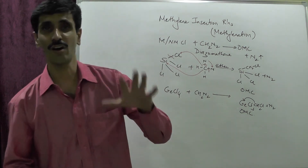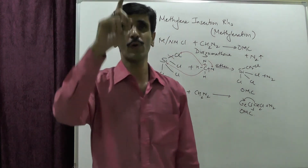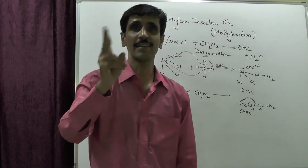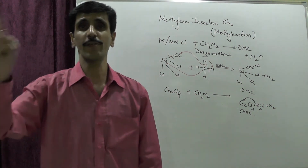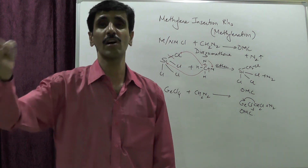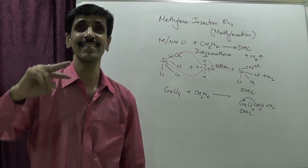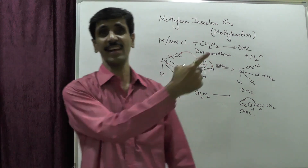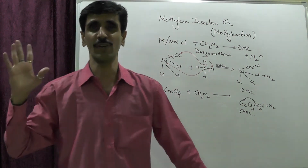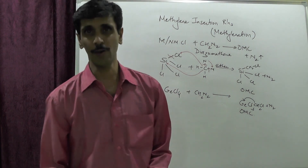With this, we finish all five methods of preparation of organometallic compounds. The first was oxidative addition, also called direct reaction of metals. The second was metal-metal exchange reaction, also called transmethylation. The third was carbonion-halide exchange reaction, also called metathesis. The fourth was metal-hydrogen exchange reaction, also called transmetallation. The fifth and last was methylene insertion reaction, also called methylenation reaction. I hope you have understood all five preparation methods of organometallic compounds. Thank you so much.